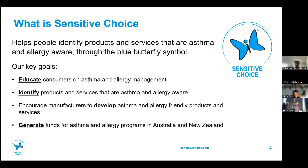An example is a large organisation that came to us wanting their paints approved. After going through our process, they redeveloped their entire formulation so they could come back for approval. Another big goal of Sensitive Choice as part of the National Asthma Council is to generate funds for asthma and allergy programs run both in Australia and overseas.